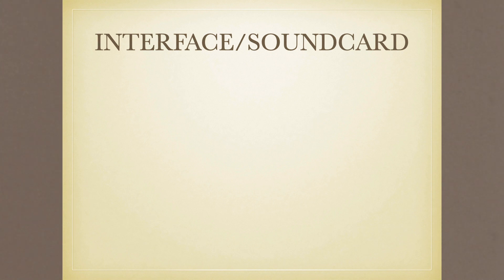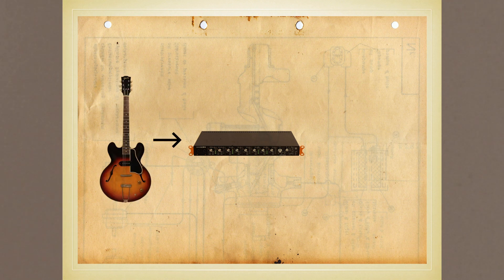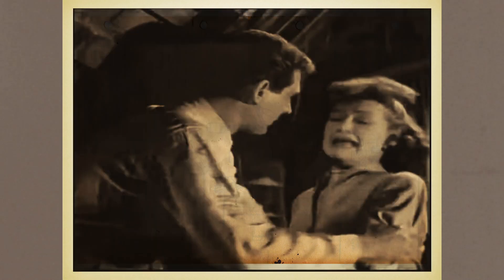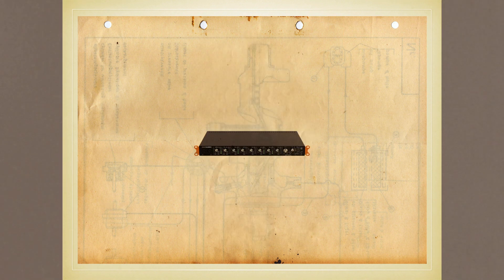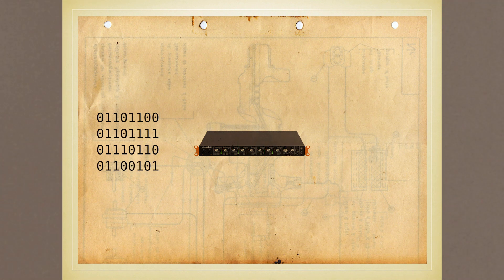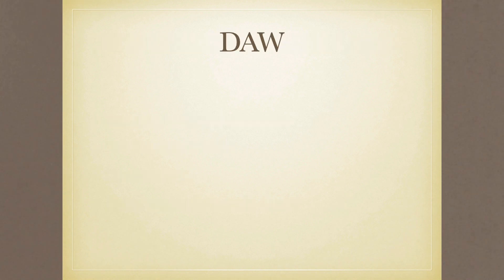Next on the list is interface, or sound card! These come in all sorts of different shapes and sizes, but essentially they're a piece of hardware that allows you to take an analog signal, convert it into a digital signal, and put it into your personal computer. This same device also does the inverse - takes a digital signal and converts it back into an analog one, which allows you to listen back through headphones or speakers. This allows you to use a microphone, electric guitar, bass, or any other kind of audio source, and record it into a piece of software called a DAW.